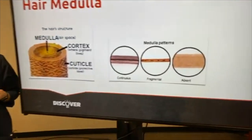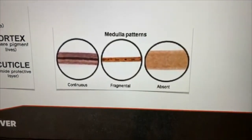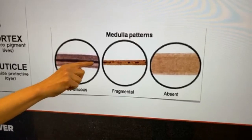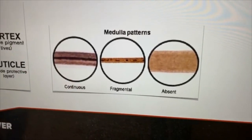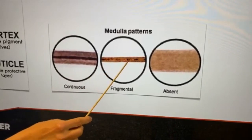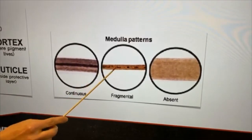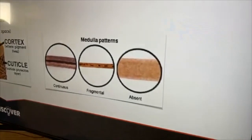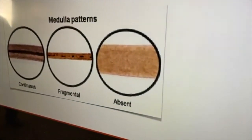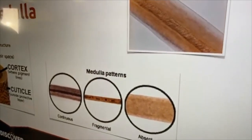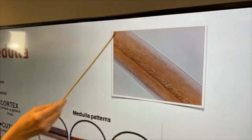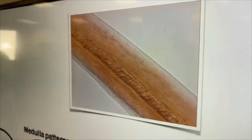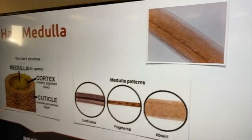There are three basic medulla patterns. In a continuous pattern we see a solid black line running up through the center. In a fragmented medulla pattern it is broken — almost like morse code, dots and dashes running up the center of the hair shaft. Some people have what we call absent, where you literally just don't see a pattern in the medulla at all. These are all human hairs. When we go look at animals, it is distinctly different.